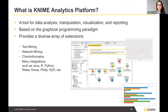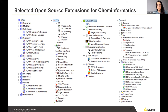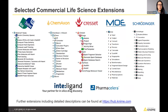We have a number of extensions available for cheminformatics. The most popular open-source ones include the Chemistry Development Kit (CDK), which we work closely with, as well as the RDKit extension, the Erlwood extension developed by Eli Lilly, and Vernalis. We also have extensions from licensed partners such as BioSolveIT, ChemAxon, Cresset, MOE, and Schrödinger — so if you have a license for one of these tools, you can use those nodes as well.